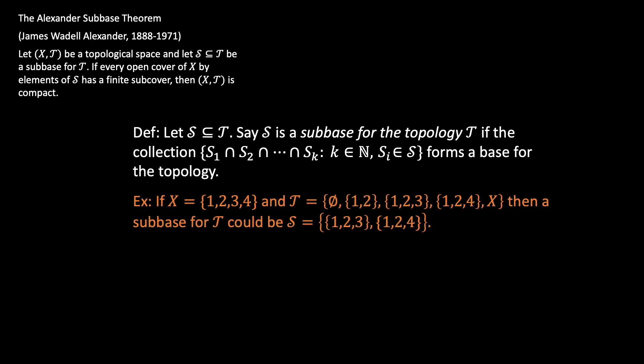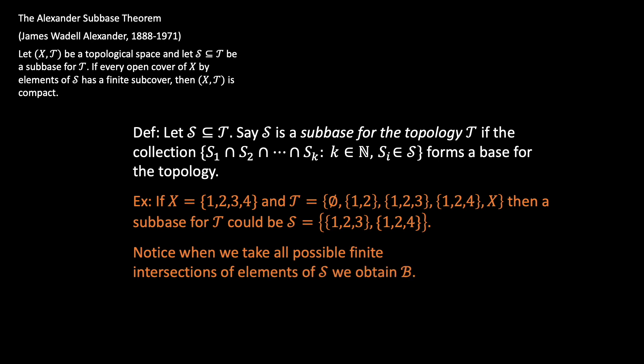Here's an example. Let X be the same set {1, 2, 3, 4} with the same topology T from before. Then a subbase for this topology could just be the two sets {1,2,3} and {1,2,4}. Notice that when you take all finite intersections of those two elements, you obtain the basis B from the previous slide.